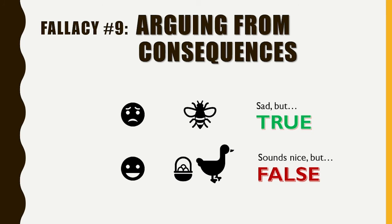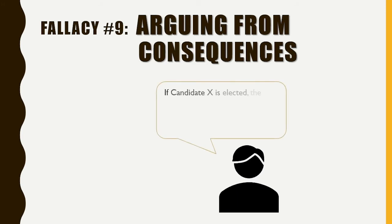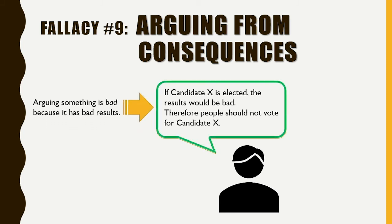It's important to point out that referring to consequences in an argument is not always fallacious. There is a difference between arguing that something is bad because it has bad results and arguing that something is false because it has bad results. For example, someone could argue that if Candidate X is elected president, the results would be bad for the country, therefore people should not vote for Candidate X. While this argument includes an appeal to consequences, it is not fallacious — the person is simply using alleged negative consequences as a reason to not do something. This would be like arguing that you shouldn't touch poison ivy because it will give you an itchy rash — a perfectly logical line of reasoning.